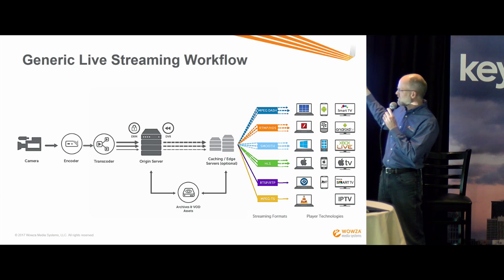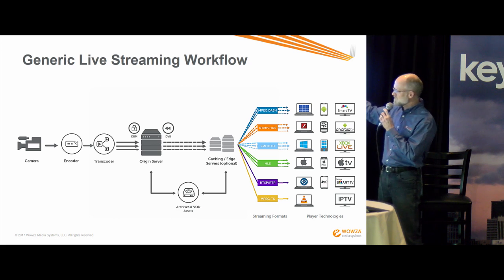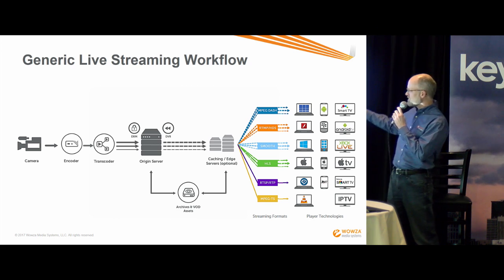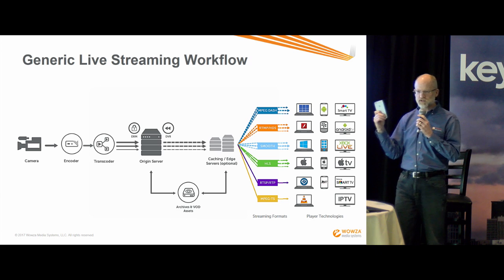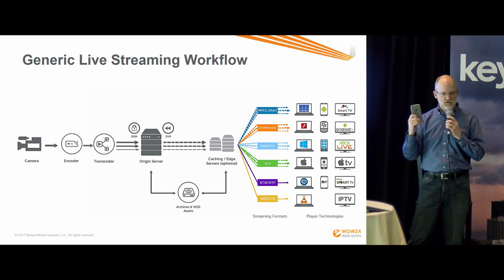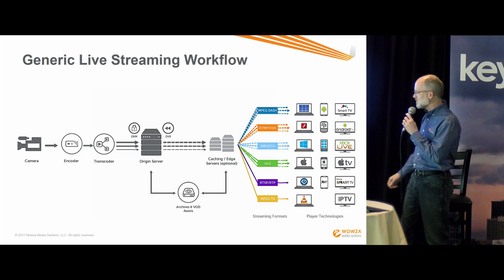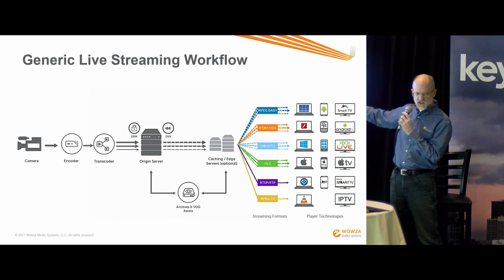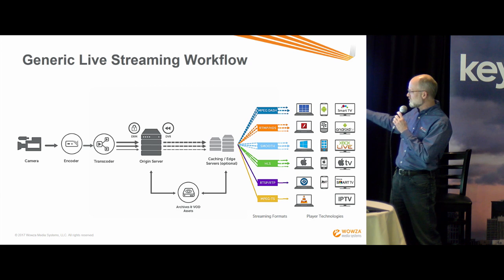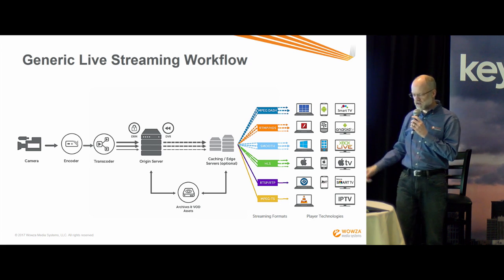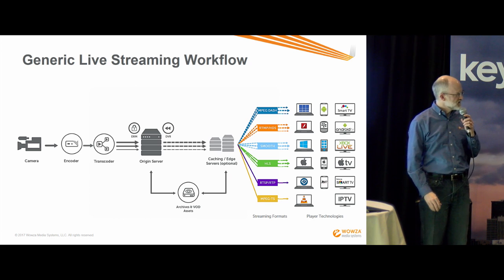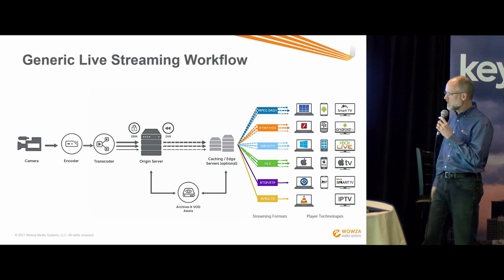Those formats include MPEG-DASH, and RTMP, which was the Flash flavor for many years and still is, although Flash is waning fast. There's also smooth streaming — the first adaptive bitrate streaming that was commoditized in the market — followed soon thereafter by HLS from Apple. That's how we watch almost everything on mobile devices today, because Apple said if you're going to have a video application on iTunes, it's got to support HLS, which is HTTP Live Streaming. And then there are older forms like RTSP, which Real Networks, QuickTime, and Windows Media used in the early days, and even older MPEG-TS for old set-top boxes.